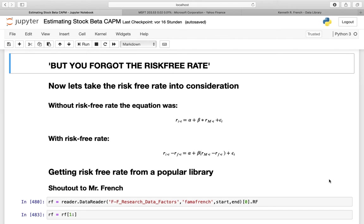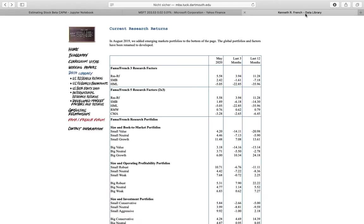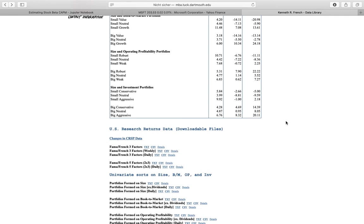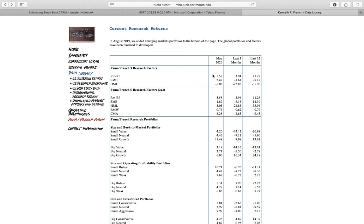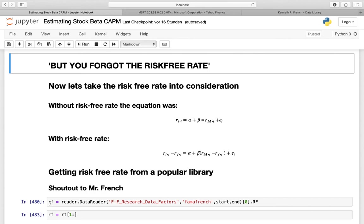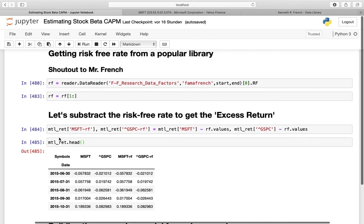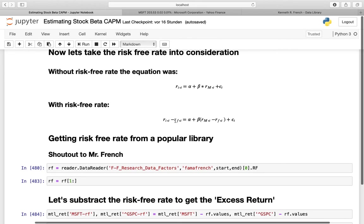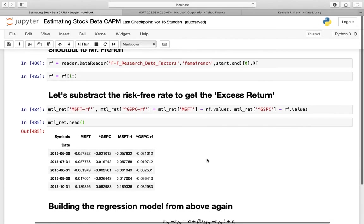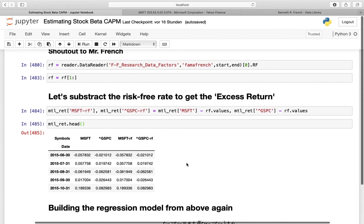Now we need this risk-free rate from somewhere and therefore we are scraping a very popular finance library, that is the Ken French data library. And this contains a huge amount of finance data. You can take a look at it, I'm linking it in the video description. In this data library there is also the risk-free rate and that is what we are getting with this line of command here. So the pandas data reader has a direct connection to this database. And what I'm doing here is just getting the risk-free rate. After that I'm subtracting this risk-free rate as in this equation here. So I'm subtracting the risk-free rate from the Microsoft return here and from the market return here. And what I'm getting here is the excess return.